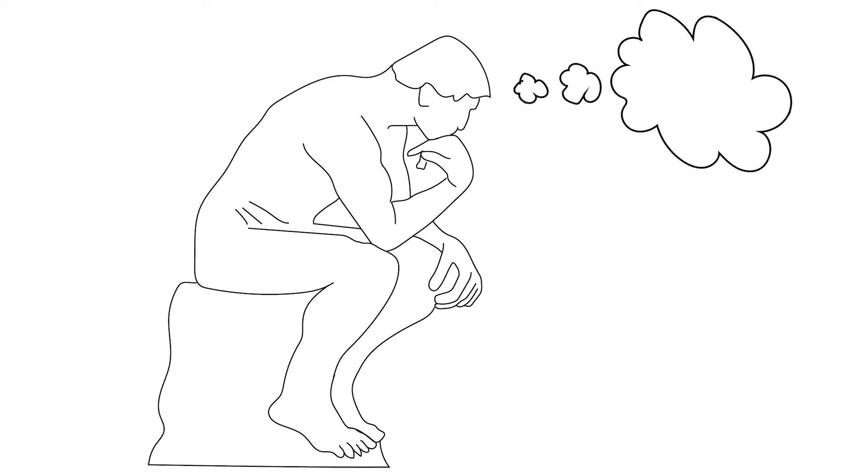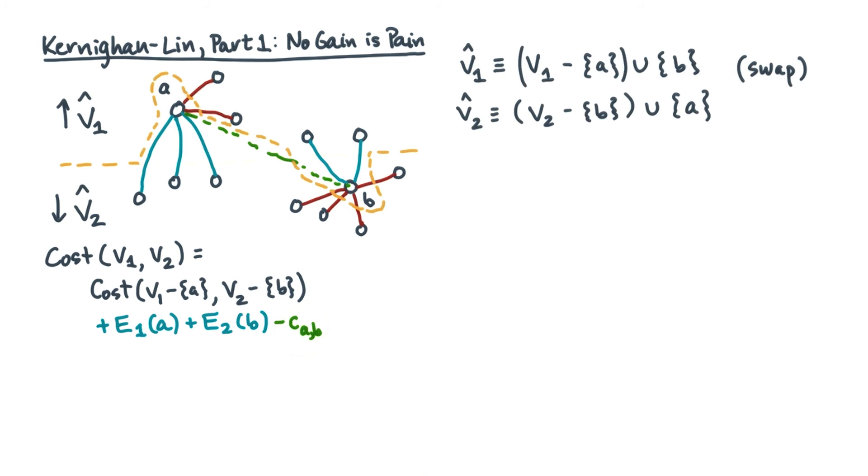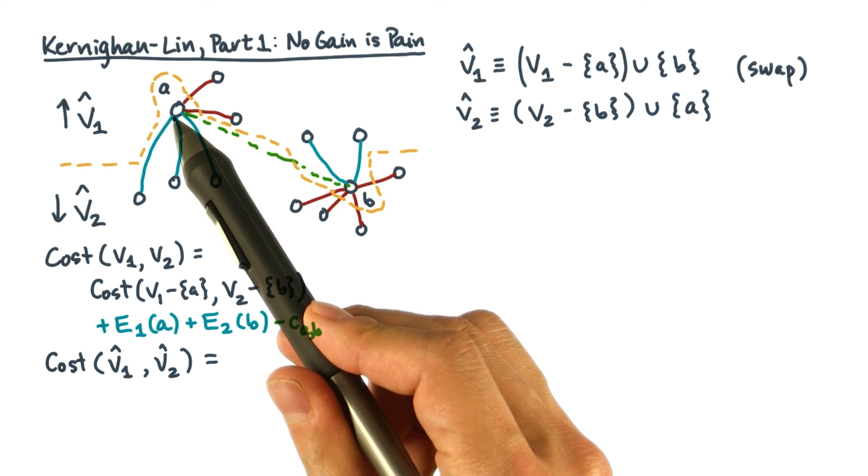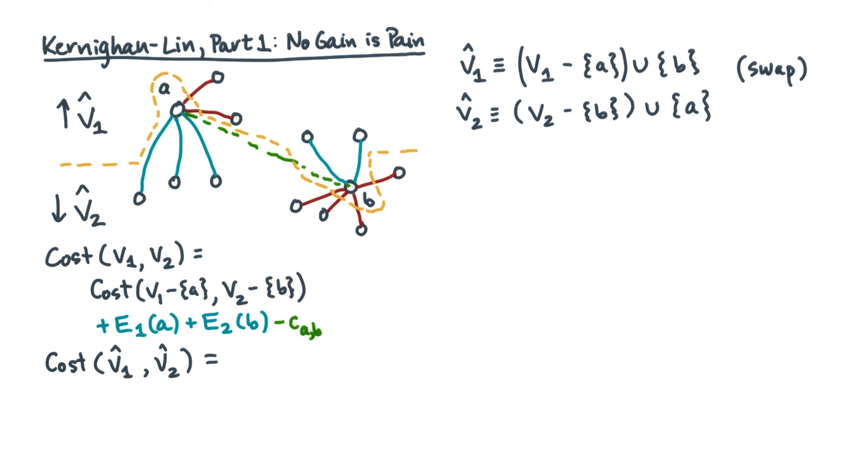Now suppose you swap A and B, what's the new cost? Well, any edge that was incident on A that was previously external is now internal. Same thing goes for B. So to get the new cost, let's start with the old cost, ignoring A and B, and then add some adjustments. The adjustments involved the internal costs of A and B, plus the constant again. Hey, what's with the plus constant now?